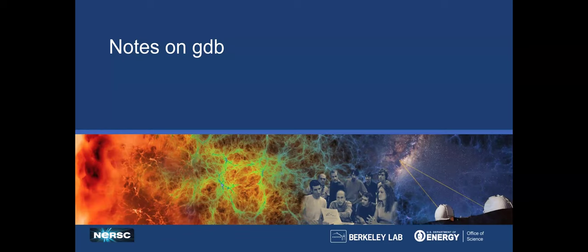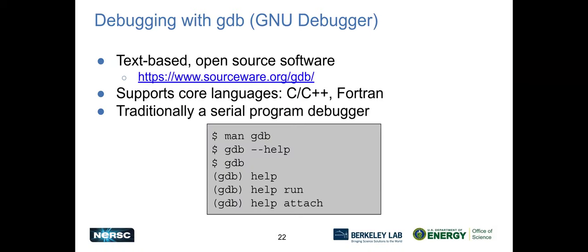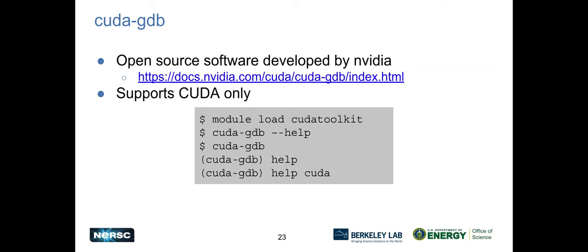Some notes on GDB. This is the common text-based open source debugger, which I've used for a very long time. That might date me. It supports all of the languages kind of out of the base. It's traditionally for serial programs, and it has very good help. It has a good run for how do I run a program or help attach for how do I attach, so that when you start a debugging session, you can actually get help in the session itself. CUDA GDB is basically a GDB with a CUDA extension that's supported and developed by NVIDIA, and it doesn't support any other programming models, just CUDA with the base languages, and it's available as part of the CUDA toolkit. So if you already have the GPU module load on Perlmutter, this is just something that you can use right now.